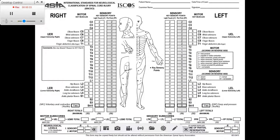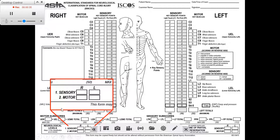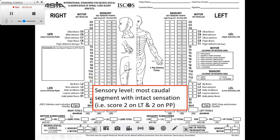We need to specify sensory for right and left, and motor for right and left. Let's start with the sensory. The sensory level is the most caudal segment — or most caudal level — which has intact sensation, meaning we should have a score of 2 for light touch and 2 for pin prick on that side.